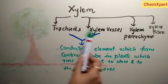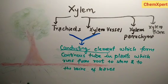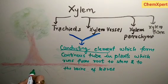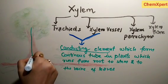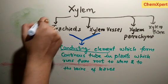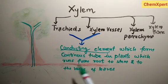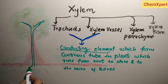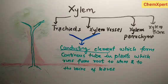Out of all xylem components, tracheids and xylem vessels form the conducting elements, which form a continuous tube from roots to stem to the veins of leaves. These different components form continuous tubes that run from roots through the stem to the veins of leaves, creating a channel through which xylem provides water.